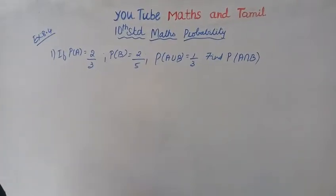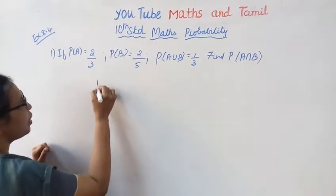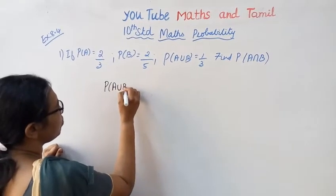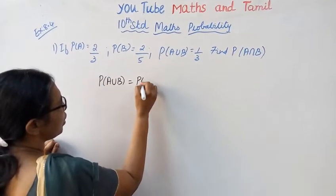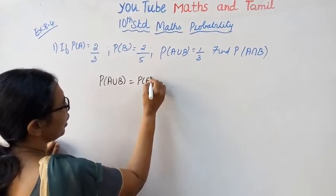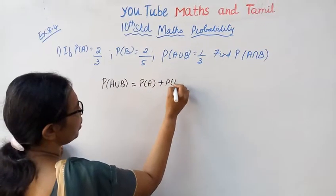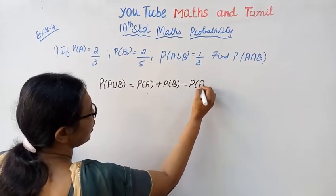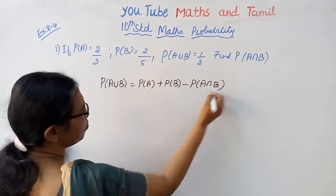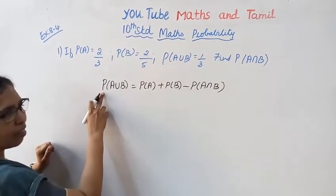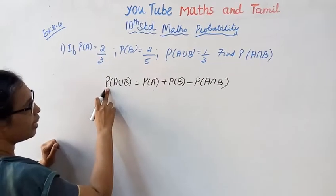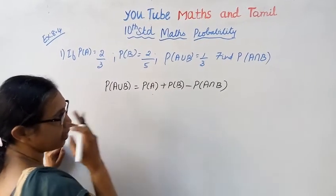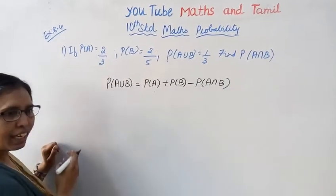P of A union B equal to P of A plus P of B minus P of A intersection B. You have a set language: N of A union B equal to N of A plus N of B minus N of A intersection B.